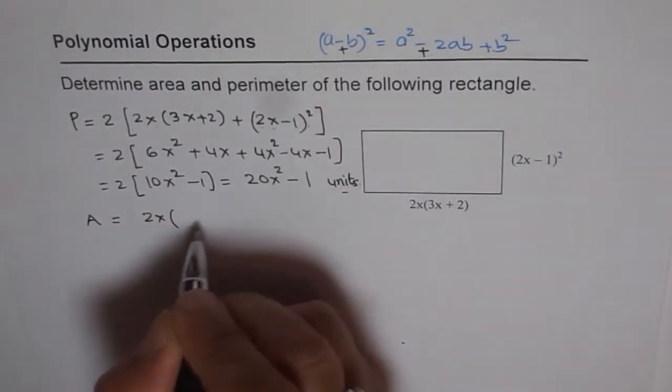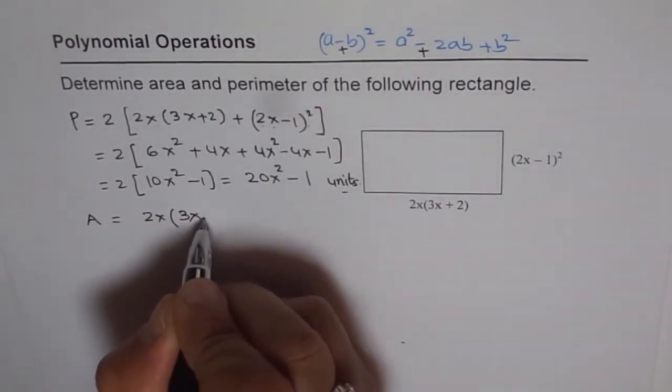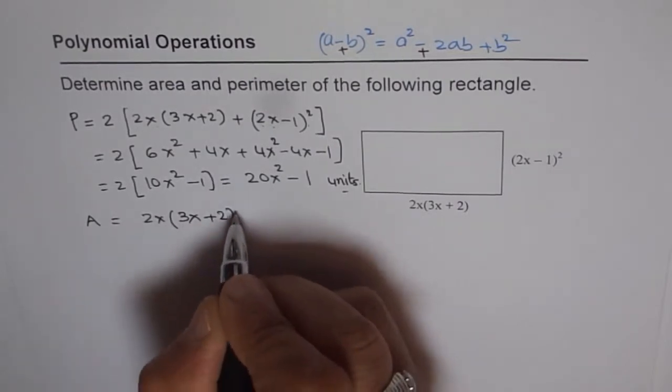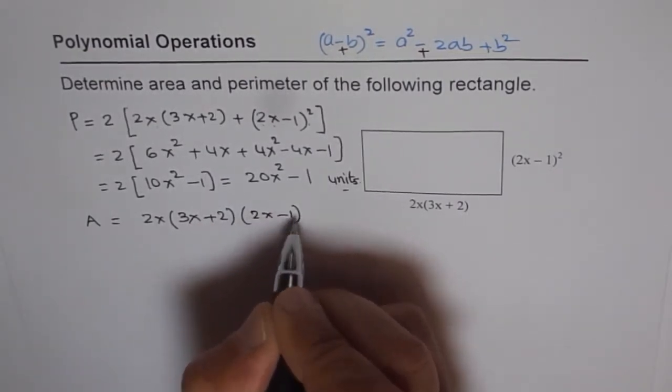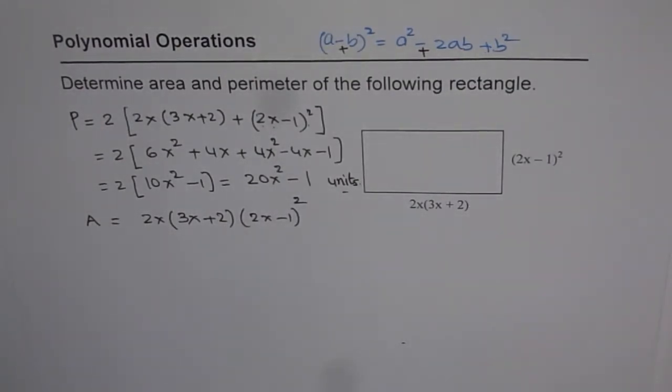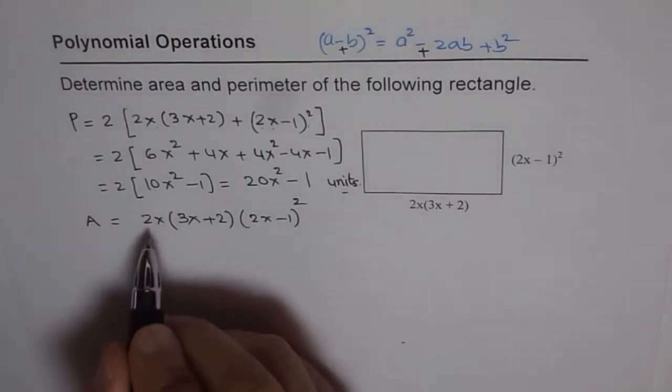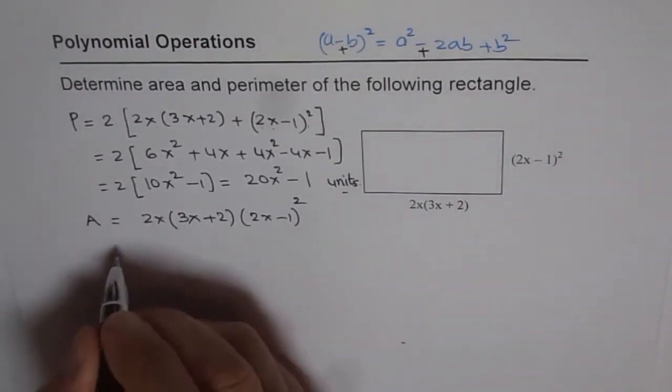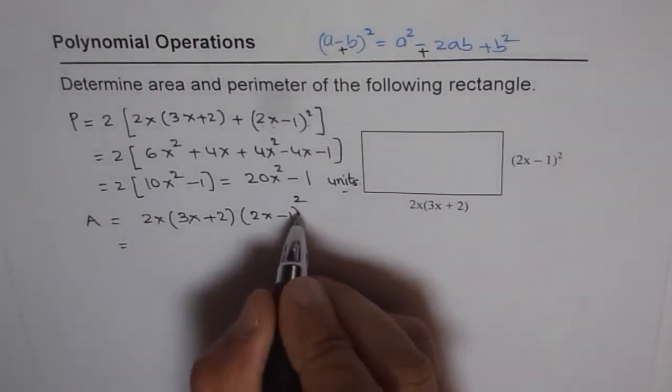2x times 3x plus 2, times 2x minus 1 whole square. So we need to multiply all these terms to get the area. So as the first step,